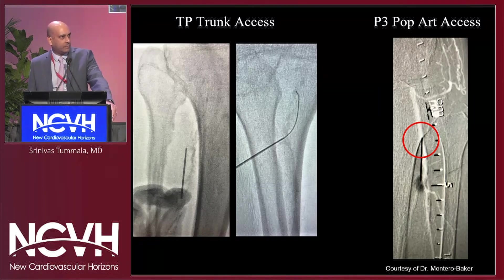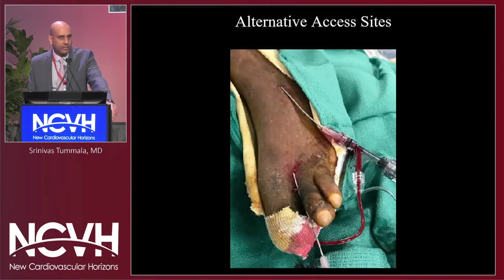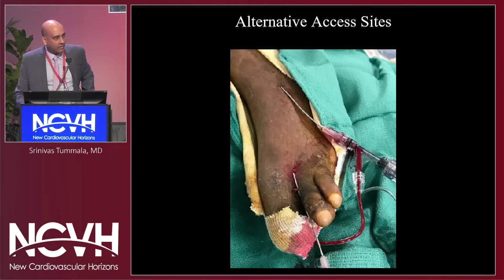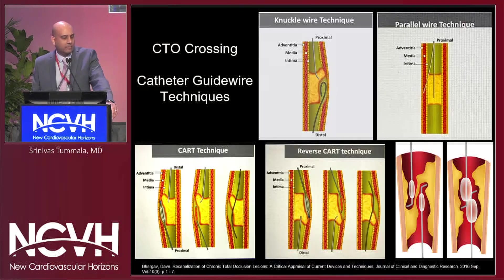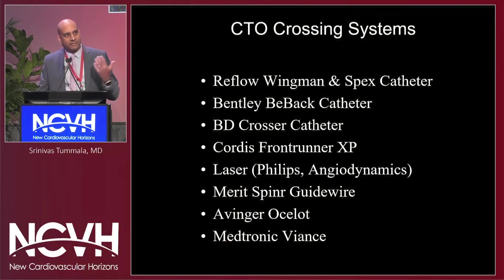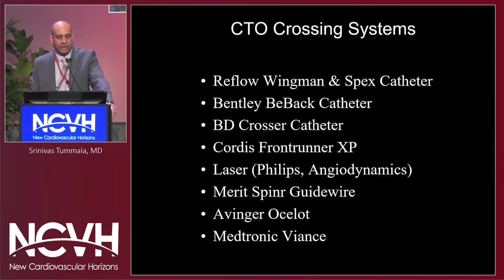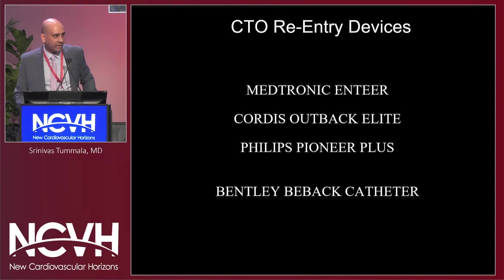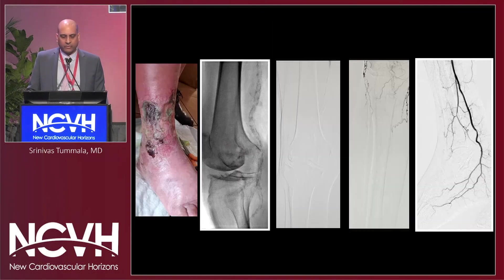Remember, the compartments get larger as you go up, so if you're not successful, bleeding and complication risk go up significantly. Don't forget alternative access sites — plantar vessels and digital artery access are becoming very important for crossing complex CTOs. All these catheter and guidewire techniques for CTO crossing are well described in both the coronary and peripheral literature. We also have many CTO crossing systems, though many are not commonly used today, have costs, are expensive, and are not always applicable depending on the circumstance. And obviously we have CTO reentry devices, which most of us have used at some point.